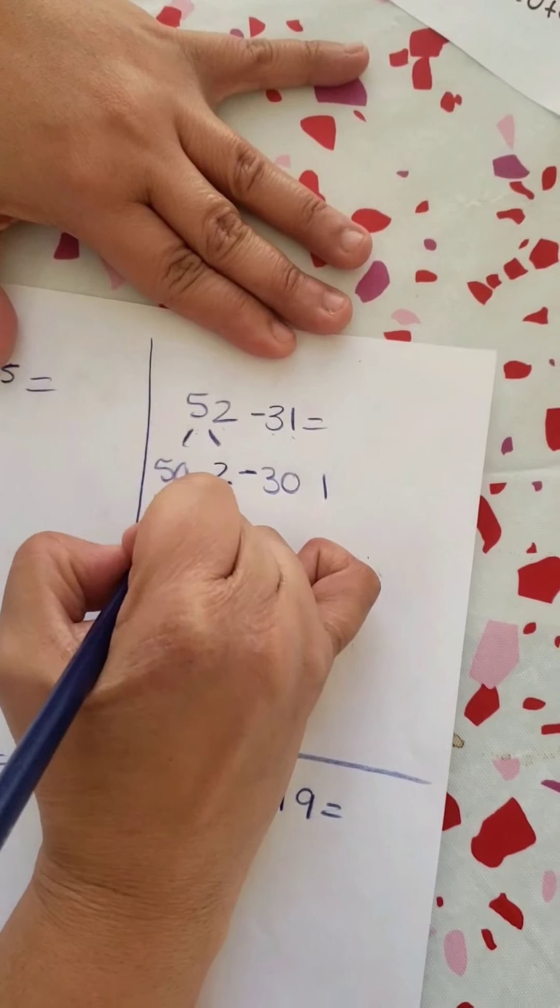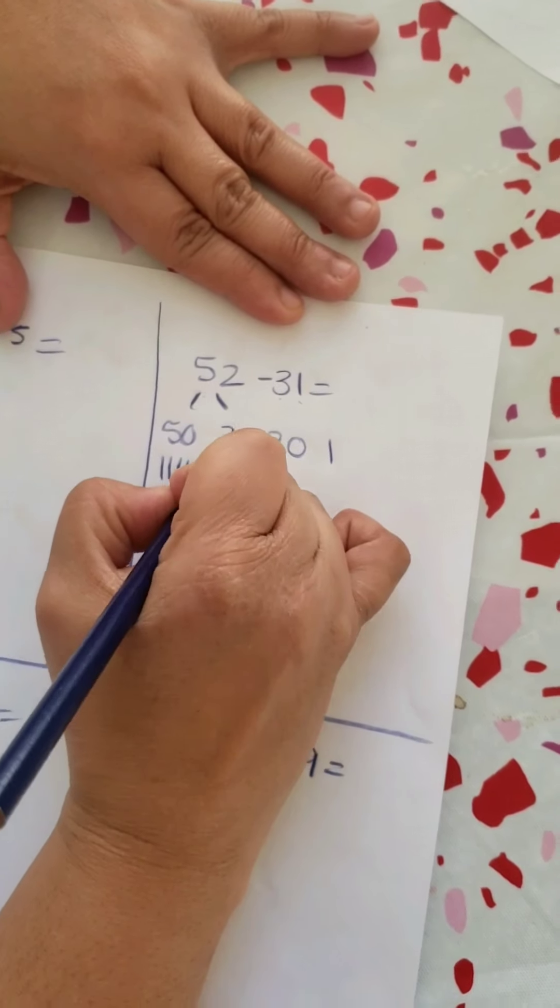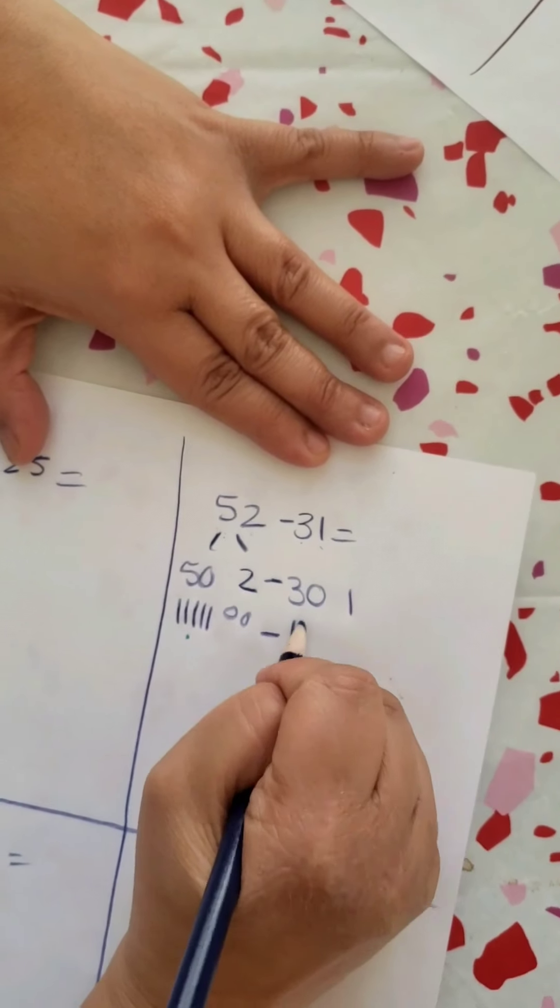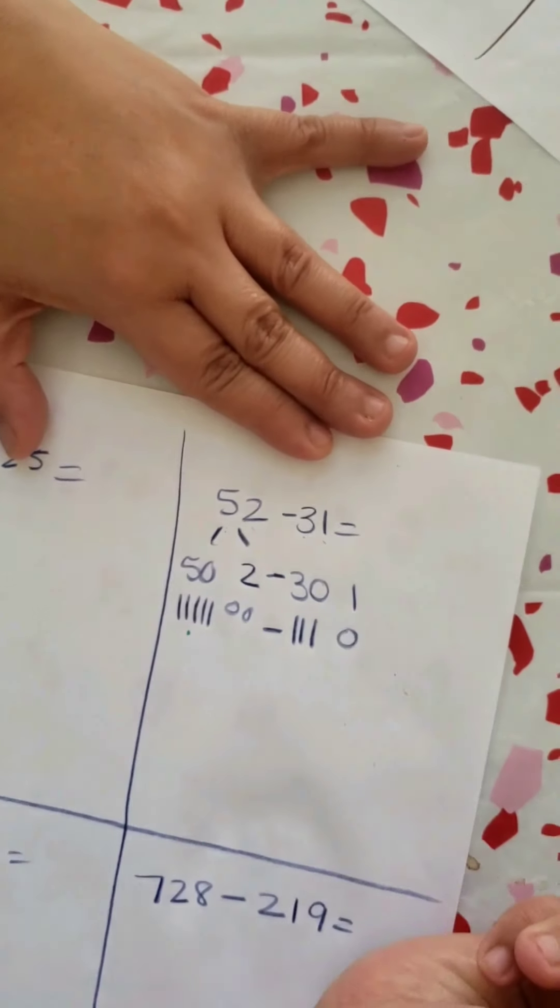I can even draw through: 10, 20, 30, 40, 50, 1, 2, subtract 1, 2, 3, and 1, right?